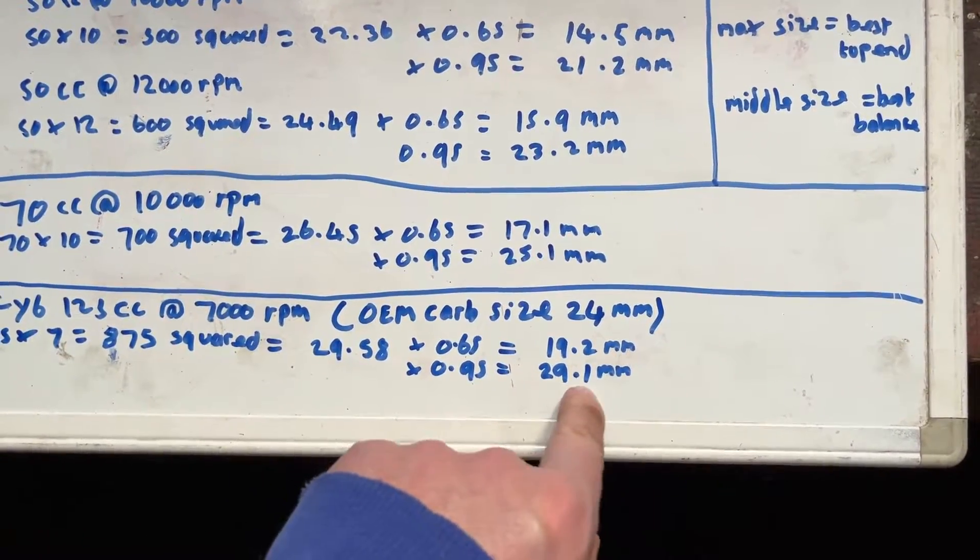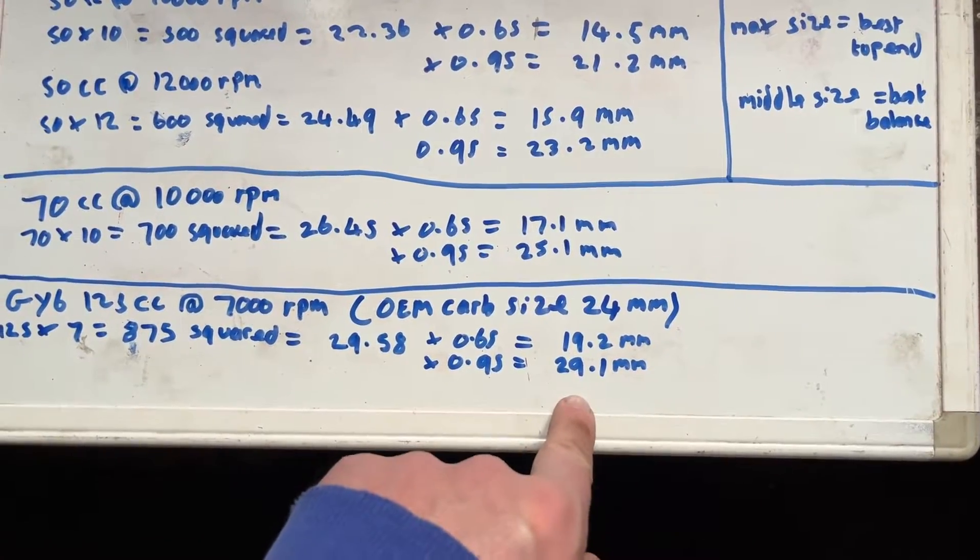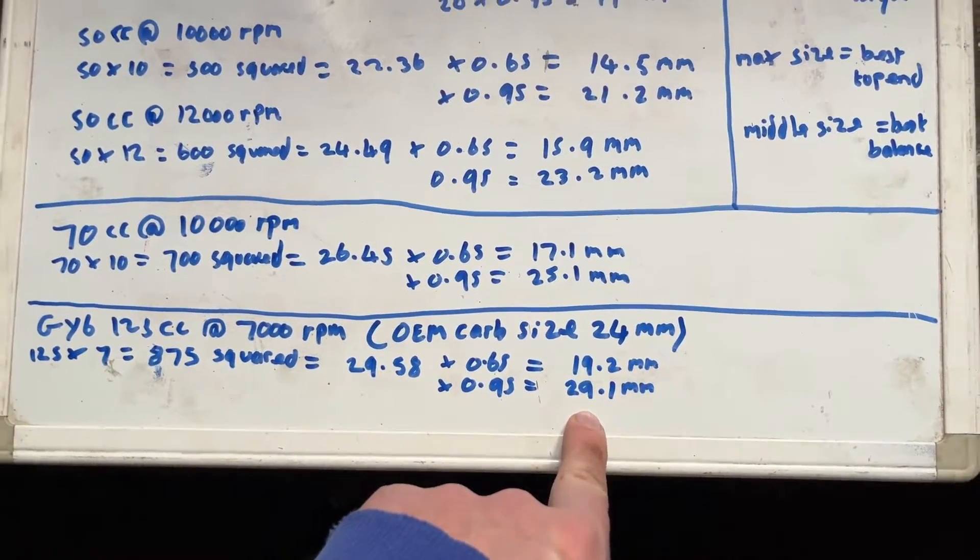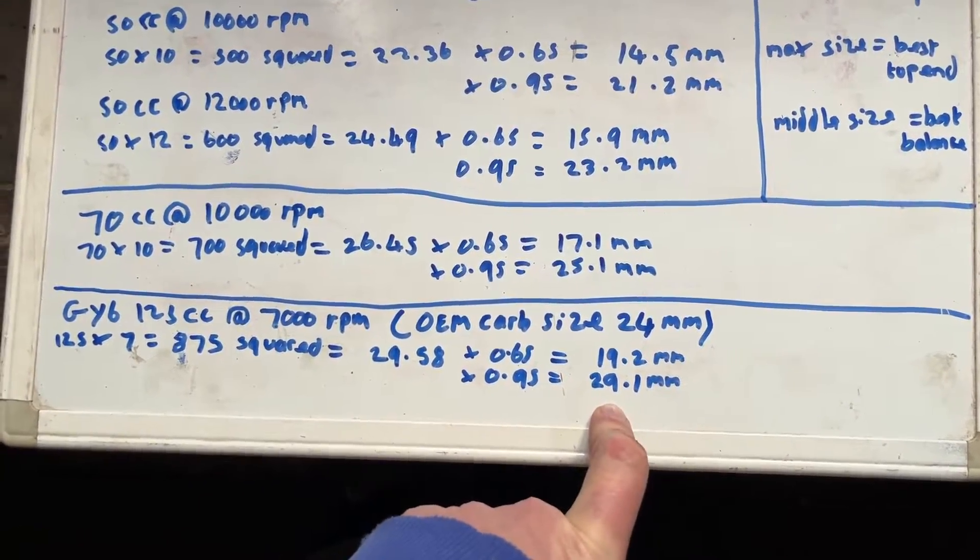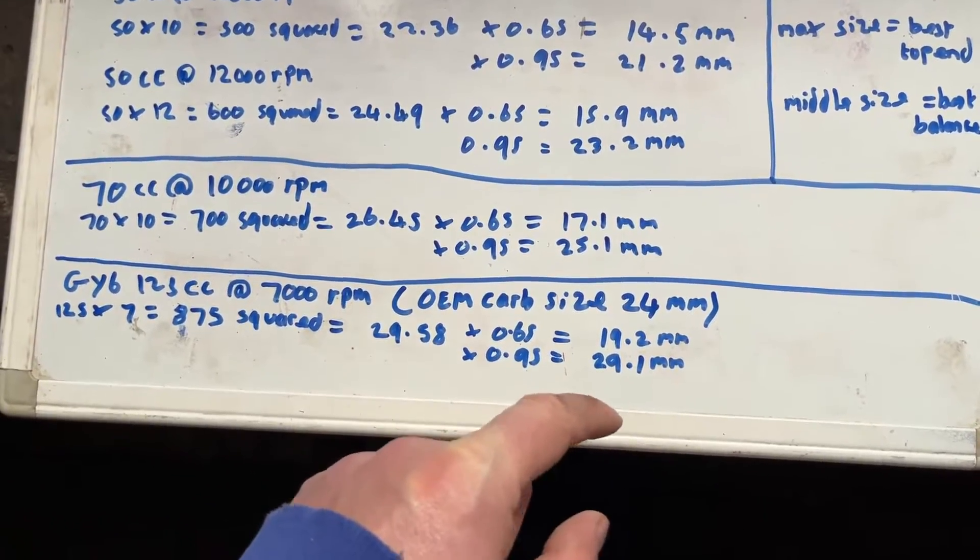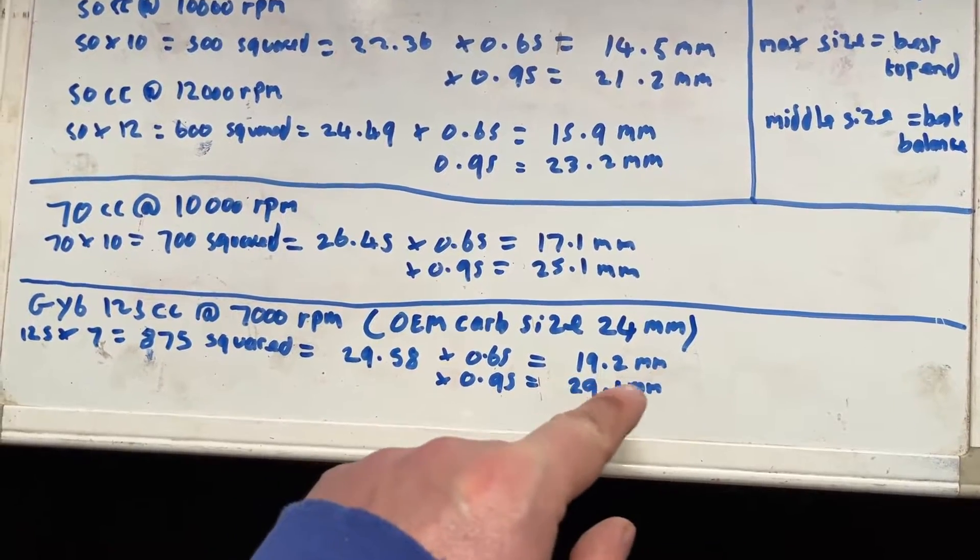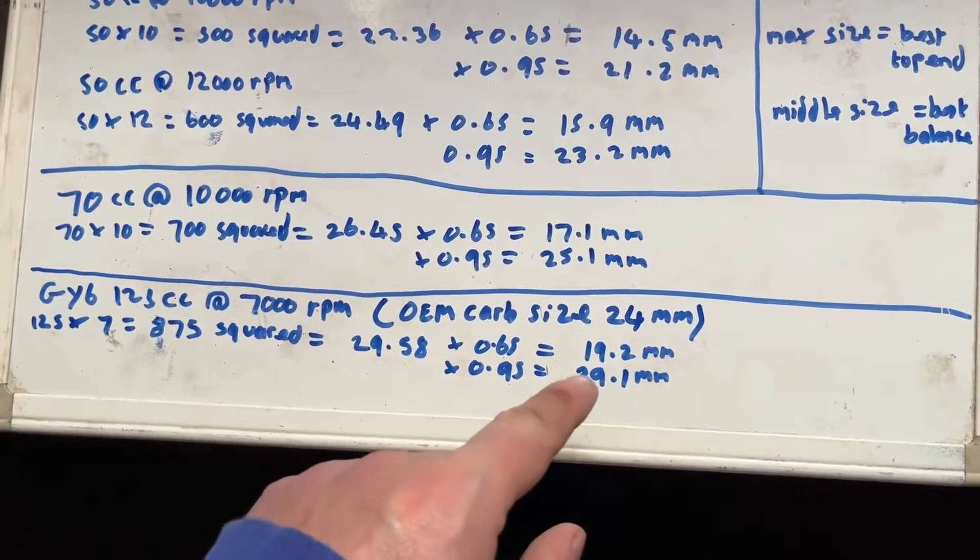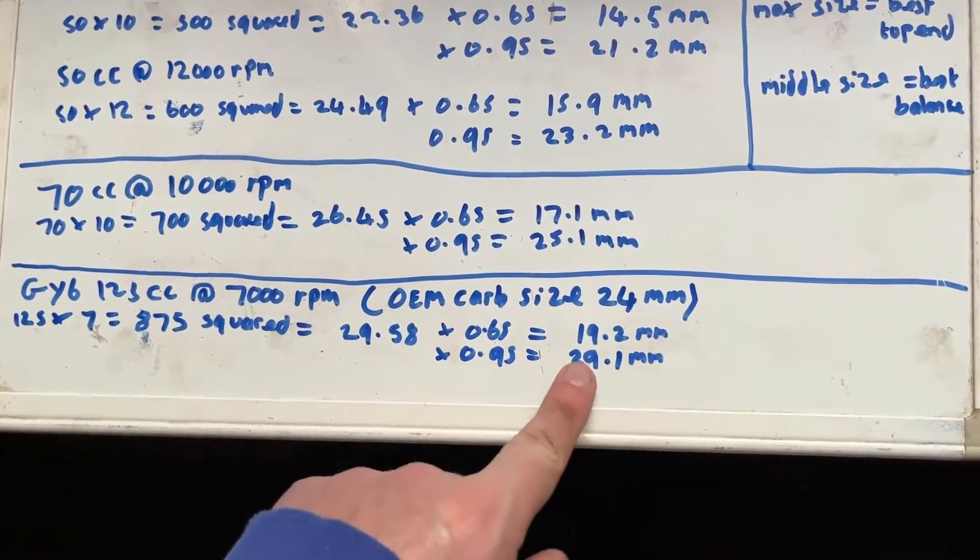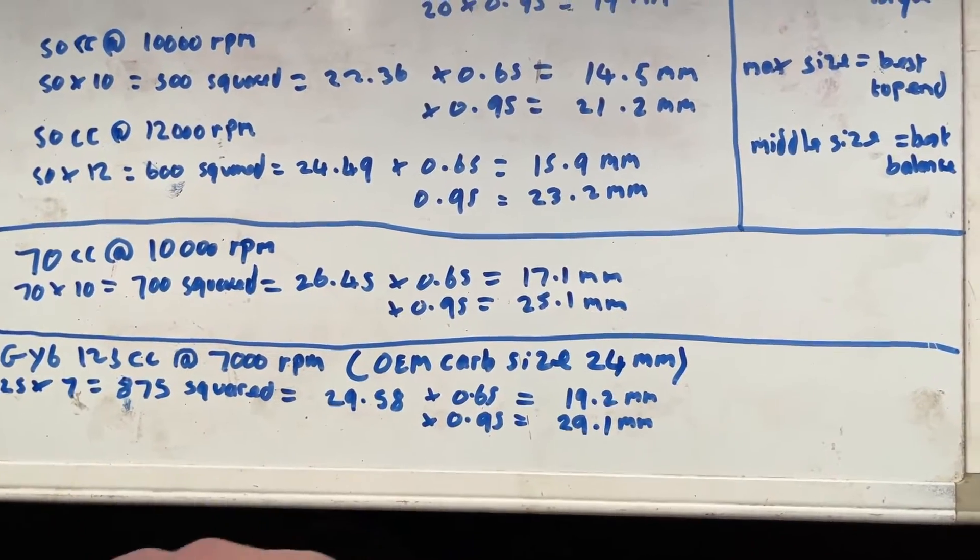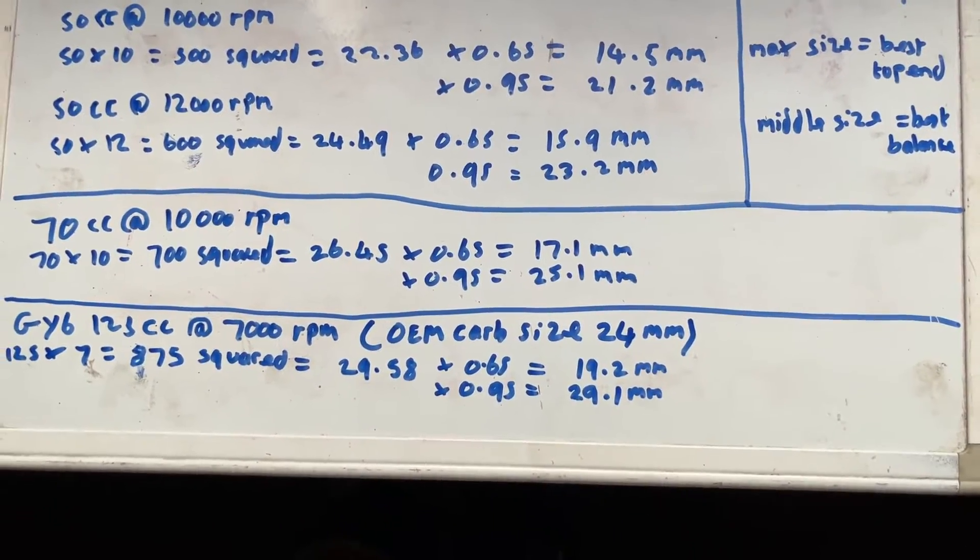As I say, there is a tiny bit of wiggle room in some of these numbers, but this is just to give you an accurate idea as possible as to what the maximum and minimum your engine requires is. Something like a 24, 26 millimeter carburetor is basically perfect. A 30 millimeter carburetor is going to be your absolute maximum and a 19 millimeter carburetor is going to be your absolute minimum.